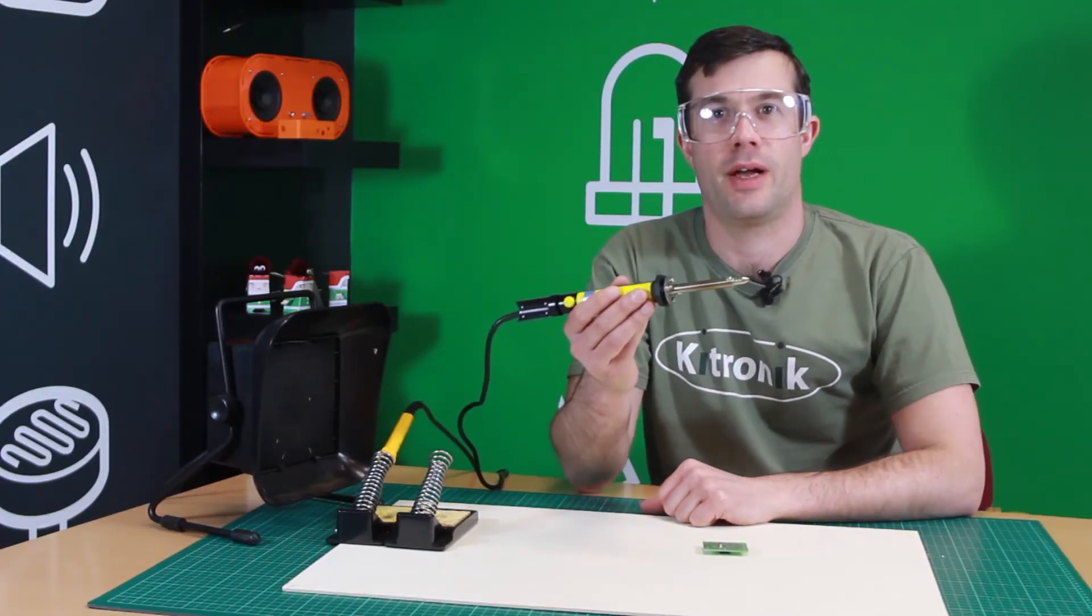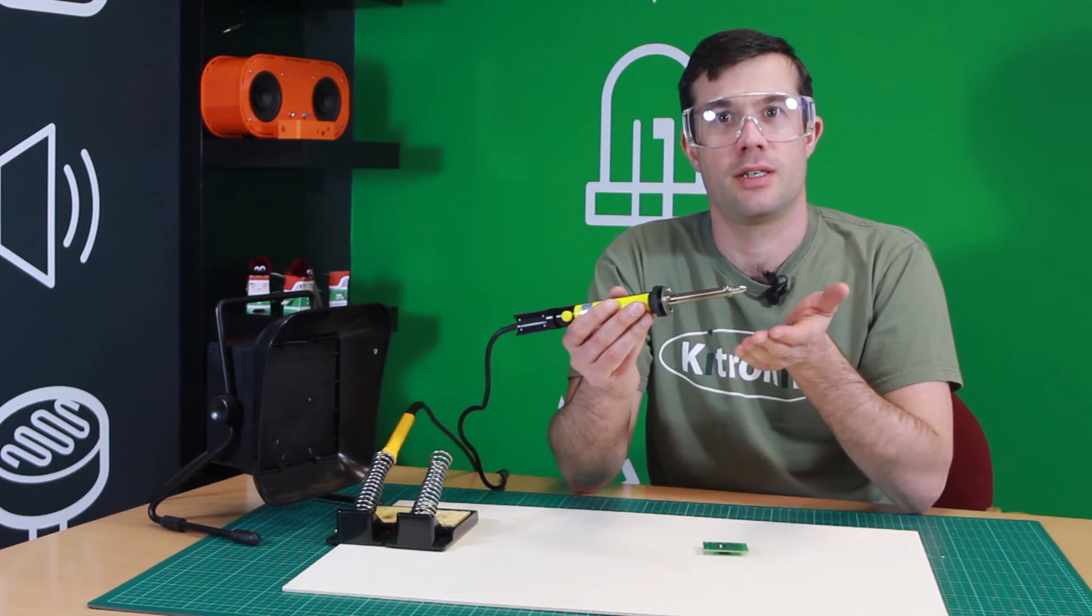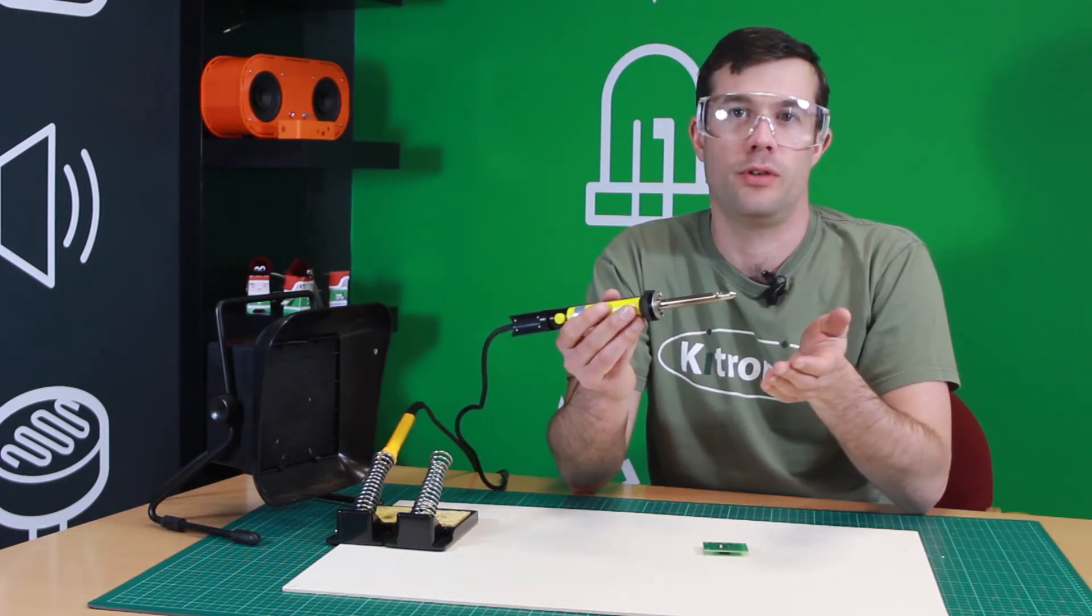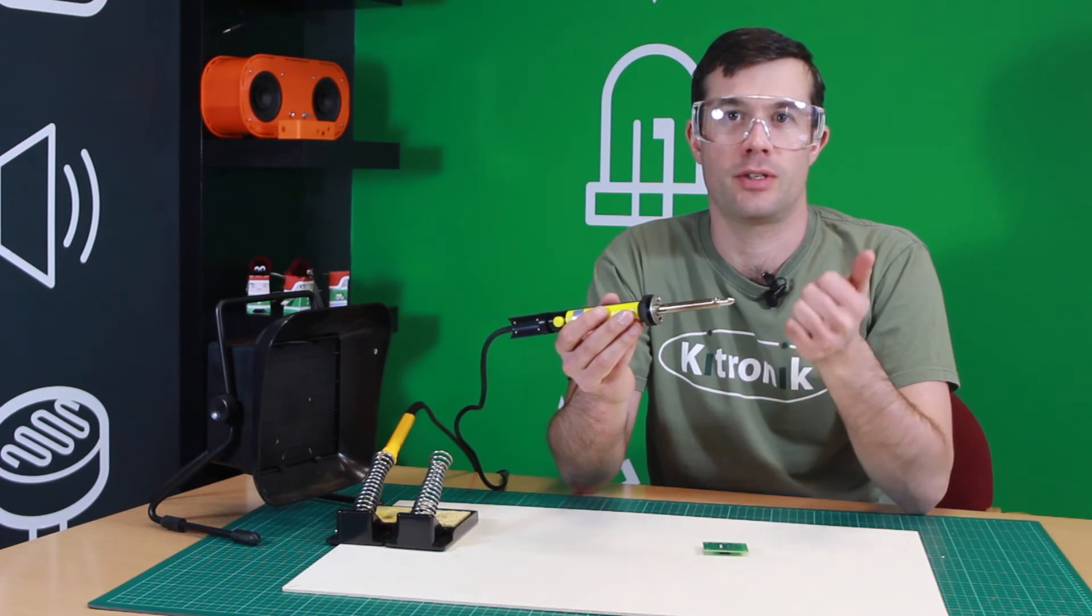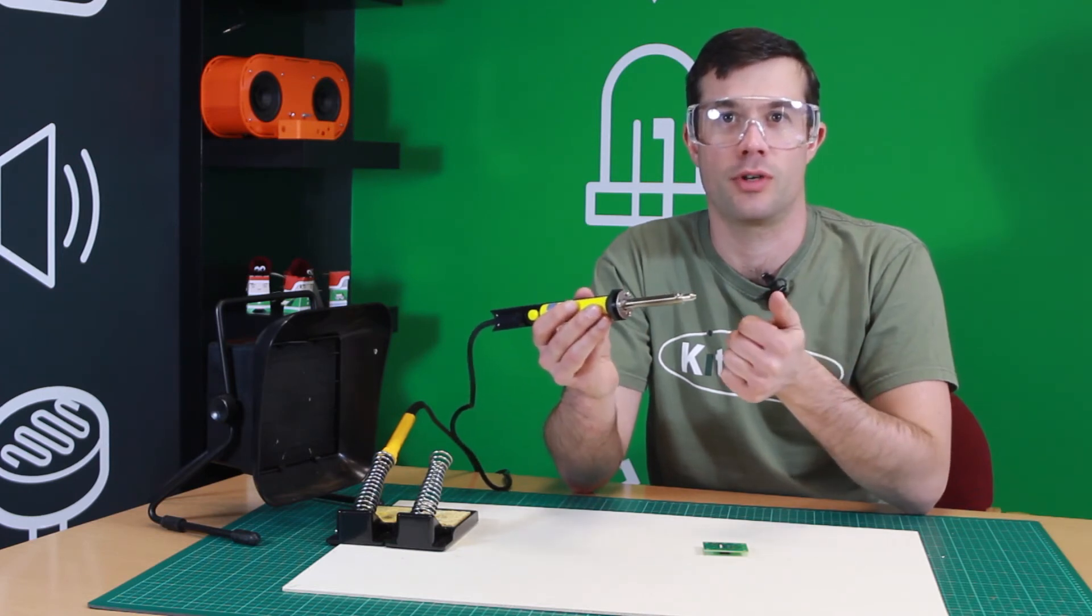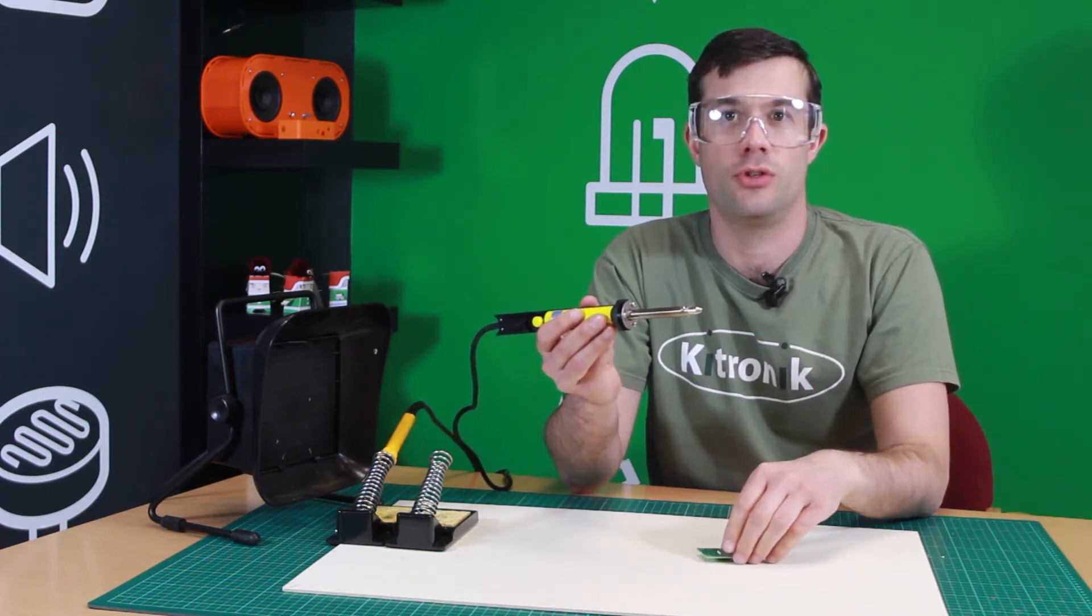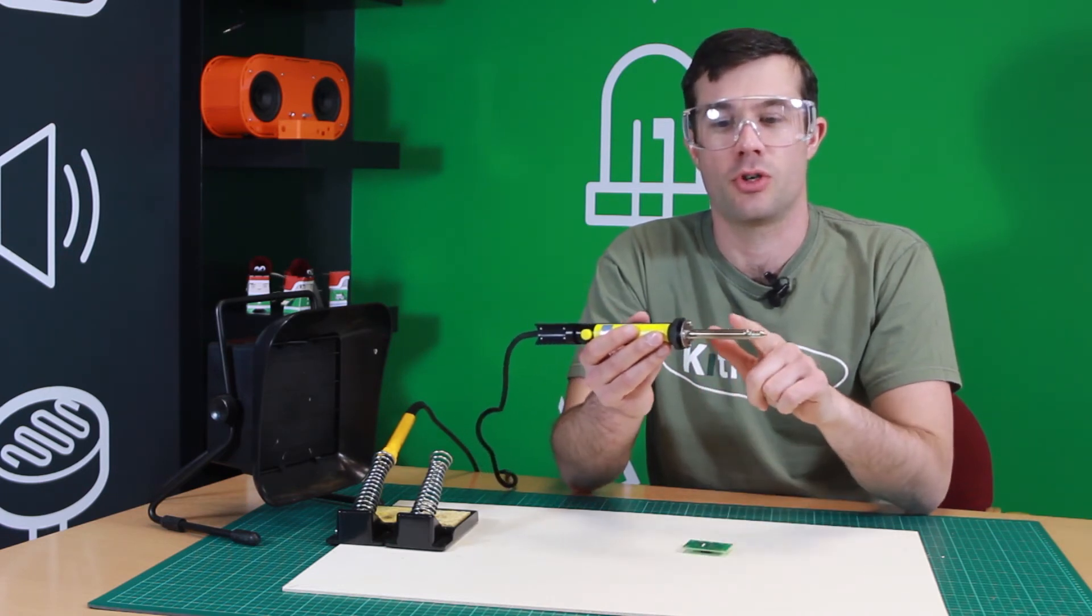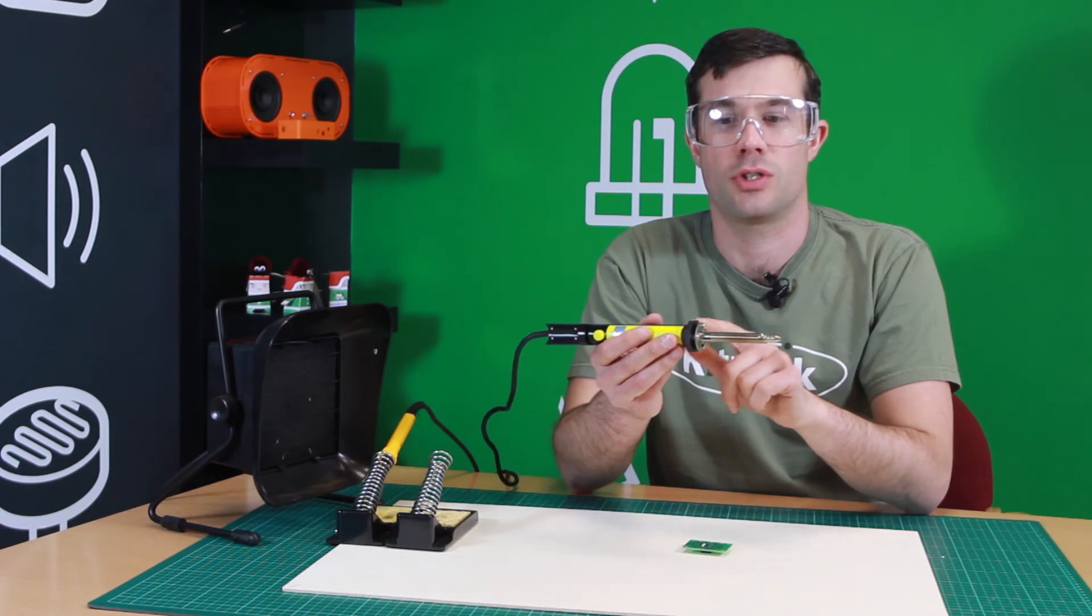So here we have a very handy little tool. What it is, is a heated solder sucker. Normally, when you're removing solder using a solder sucker, you have a separate solder sucker and a separate soldering iron. This can make it difficult to use when you're trying to also hold a PCB. This tool combines the soldering iron and the solder sucker into a single part.